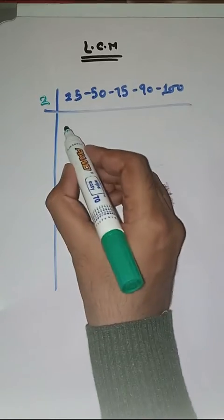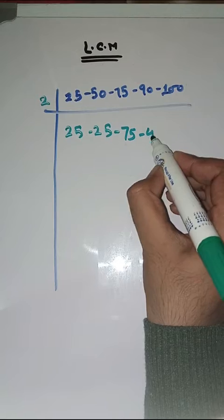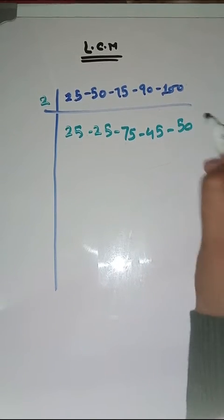We start with 2. 25 as it is, 2 25's are 50, 75 as it is, 2 45's are 90, 2 50's are 100.